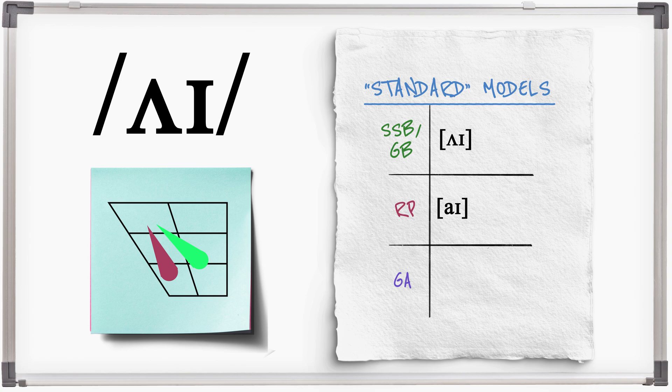In old fashioned RP a back open monophthongal vowel is possible. R. Right time. In general American a front starting place is typical. I. Right time.